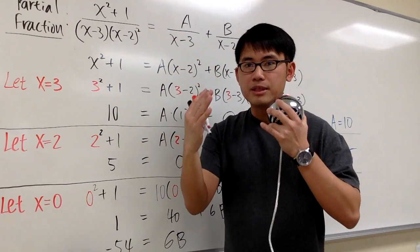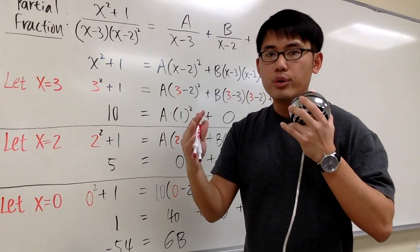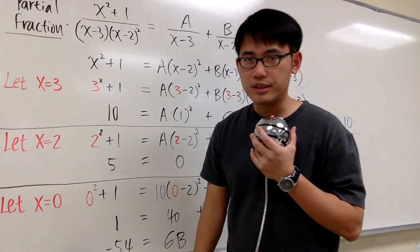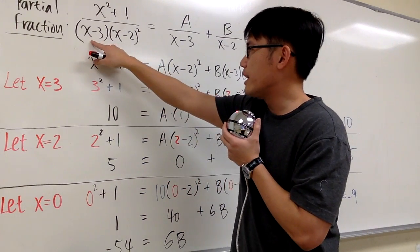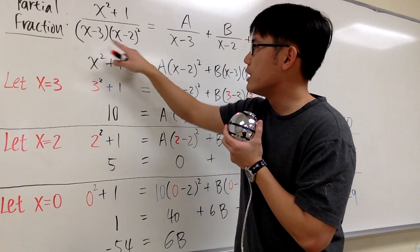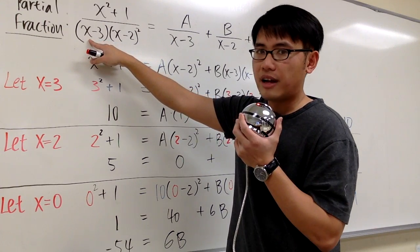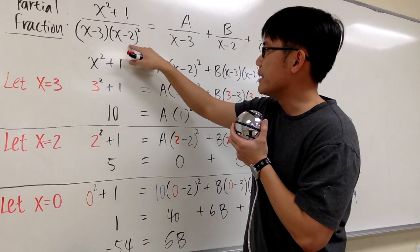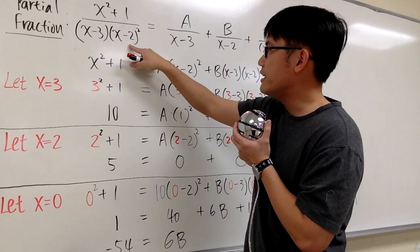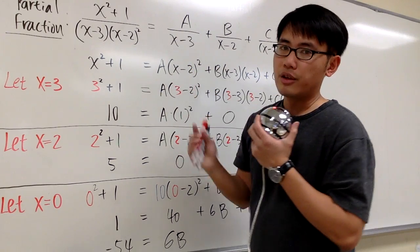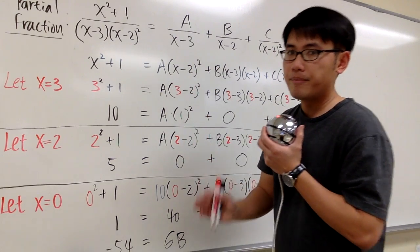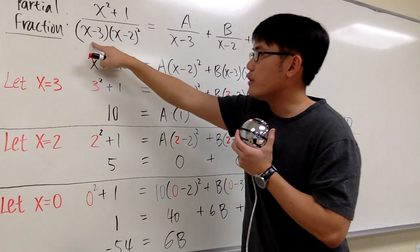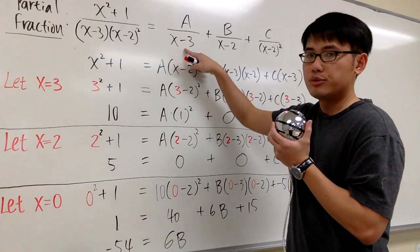If the degree on the top is bigger than or equal to the degree on the bottom, we have to do long division first. Now let's look at the denominators. Here we have x minus 2, which is a linear factor, and then we also have a linear factor x minus 2, but this one is repeated twice. So now this is the setup — I'm going to write down some number a over the first denominator, which is just x minus 3.